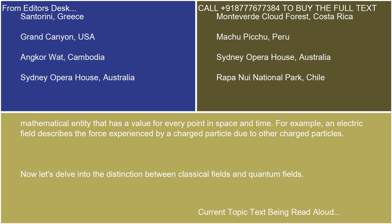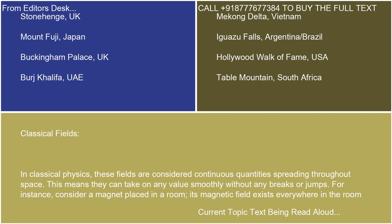Now let's delve into the distinction between classical fields and quantum fields. In classical physics, these fields are considered continuous quantities spreading throughout space. This means they can take on any value smoothly, without any breaks or jumps.